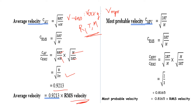The most probable velocity formula is the square root of 2RT divided by m. The root mean square velocity formula is the square root of 3RT divided by m.